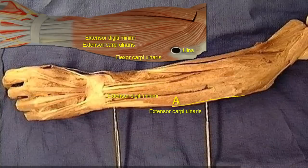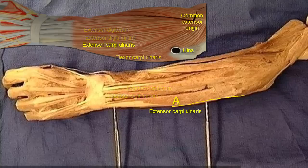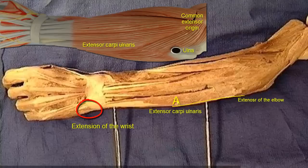And extensor digiti minimi, extensor digitorum, and so on. Extensor carpi ulnaris arises from the lateral epicondyle, common extensor origin, proximal to the elbow. Thus, it is a weak extensor of the elbow. But its most important action is on the wrist. Being attached to the 5th metacarpal bone, it extends the wrist. And crossing the medial side of the wrist, it also adducts the wrist. So, it extends and adducts the wrist.